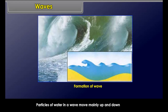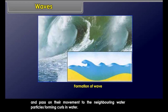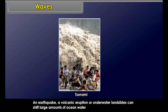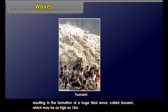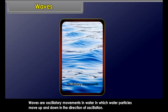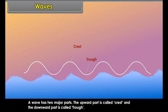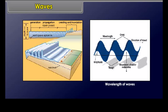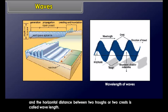Particles of water in a wave move mainly up and down and pass on their movement to neighbouring water particles, forming curls in water. An earthquake, a volcanic eruption, or underwater landslides can shift large amounts of ocean water, resulting in the formation of a huge tidal wave called a tsunami, which may be as high as 15 metres. Waves are oscillatory movements in water in which water particles move up and down. A wave has two major parts: the upward part is called the crest and the downward part is called the trough. The vertical distance between a crest and a trough is called wave height, and the horizontal distance between two troughs or two crests is called wave length.